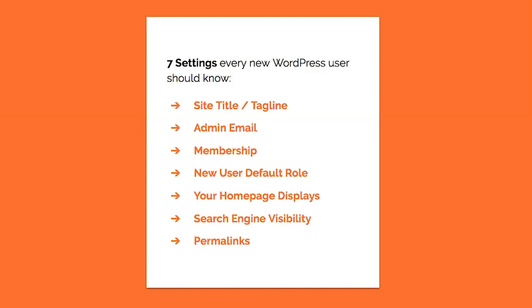In today's video I'm going to share seven settings every new WordPress user should know, and they are: your site title and tagline, your admin email, membership, new user default role, your home page displays, search engine visibility, and lastly permalinks.